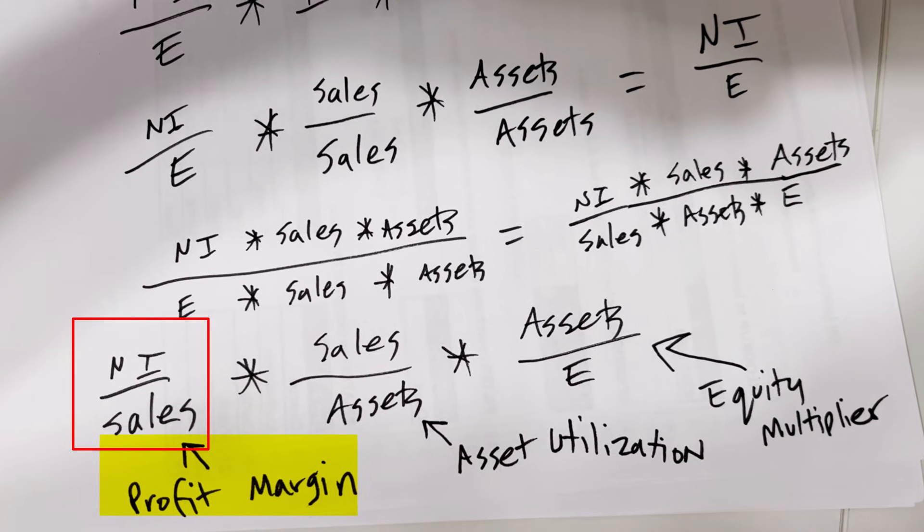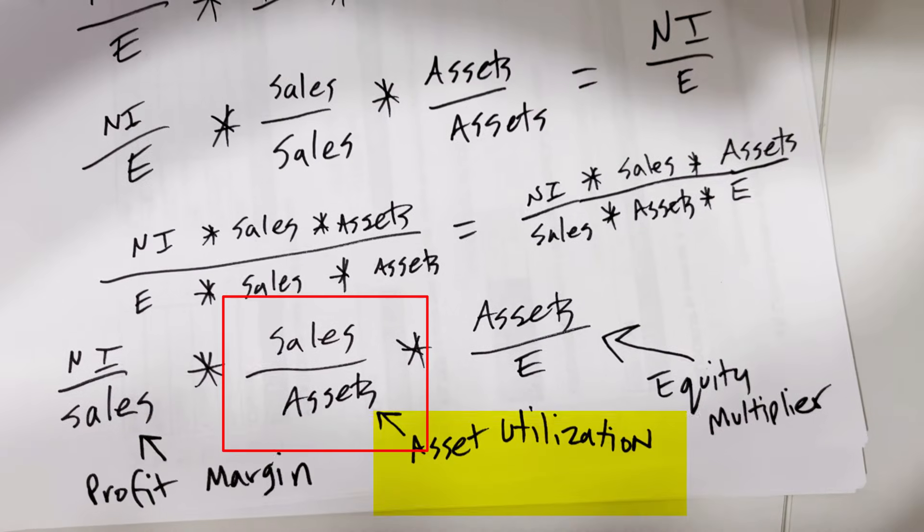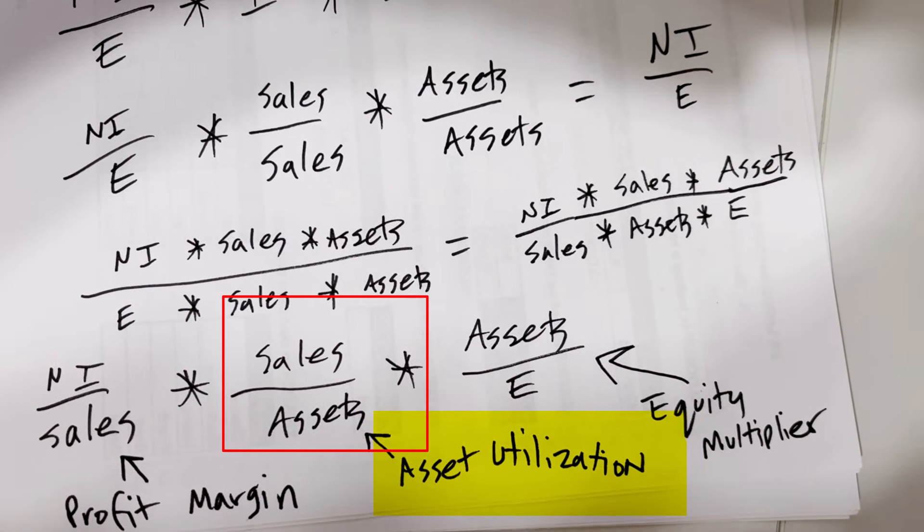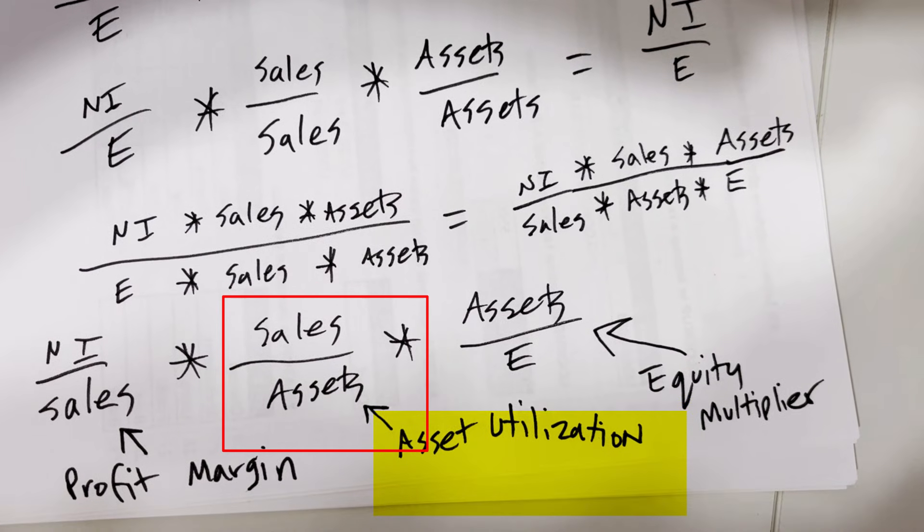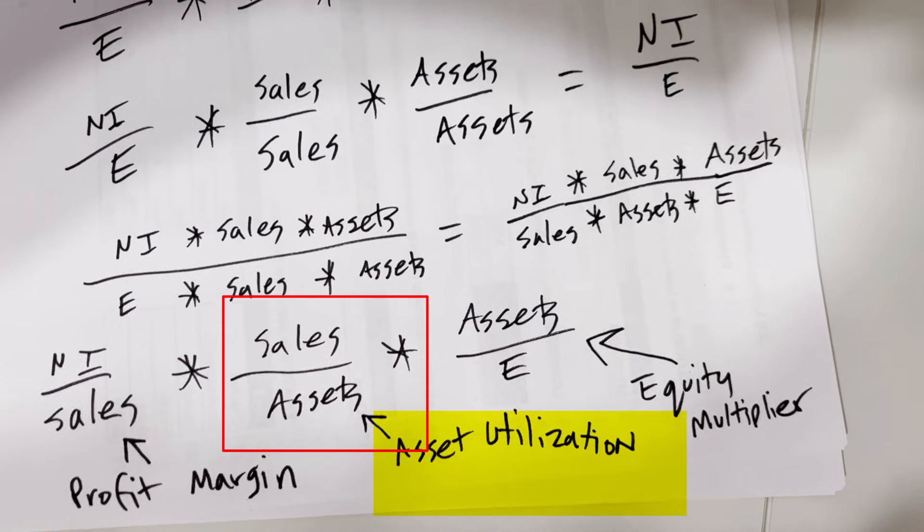That's concerning revenues and cost management, asset utilization. That means for every dollar of assets, what sales are generated. Of course, the more sales, the better.